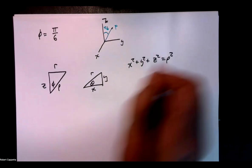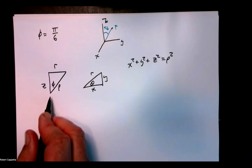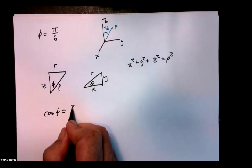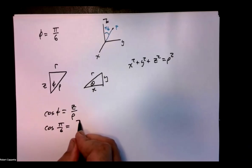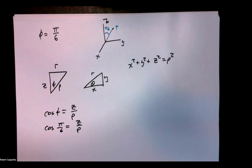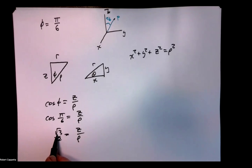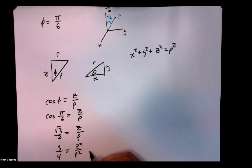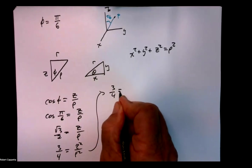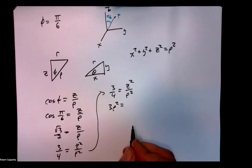Let's start and say cosine of phi — we want to get x, y, and z, and get rid of phi, rho, and theta. Cosine of phi is adjacent over hypotenuse, which is z over rho. We know that phi is pi over 6, so the cosine of pi over 6 equals z over rho. Cosine of pi over 6 is root 3 over 2, so root 3 over 2 equals z over rho. Squaring both sides: 3 over 4 equals z squared over rho squared, giving us 3 rho squared equals 4 z squared.